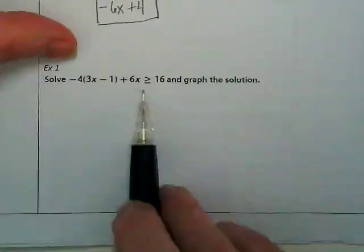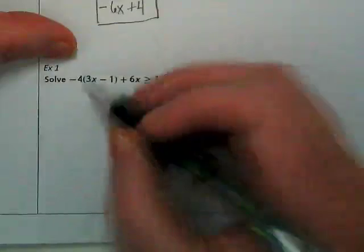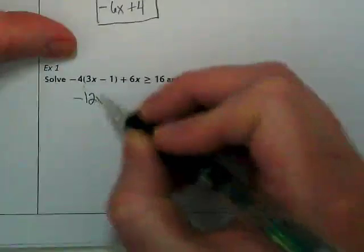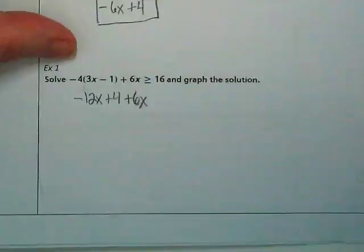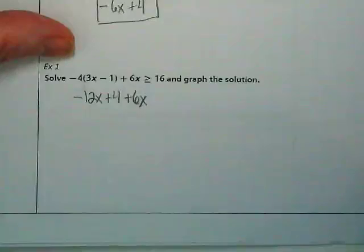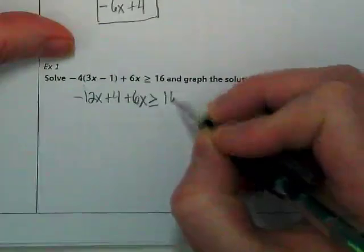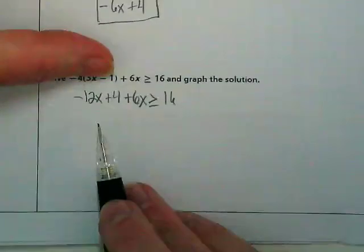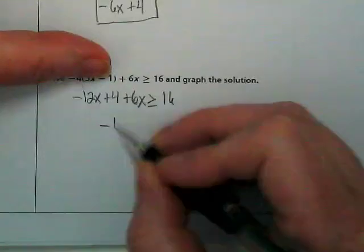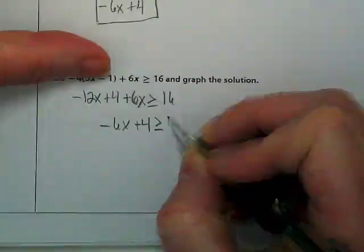Notice this first part of the expression is the same as the expression up above. So we would show negative 12x plus 4 plus 6x. What is the symbol that's there? Greater than or equal to 16. We're going to combine like terms just like we did above with the expression and we'll get negative 6x plus 4 is greater than or equal to 16.